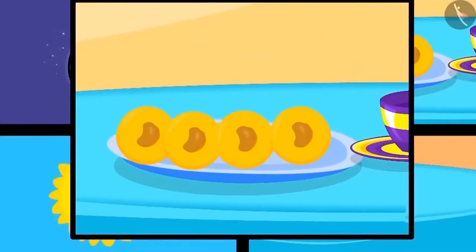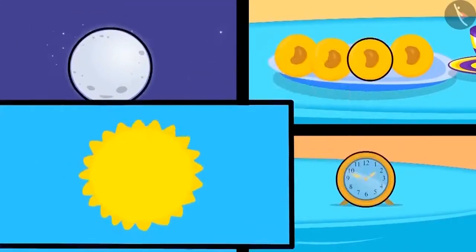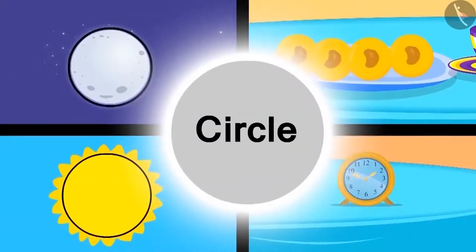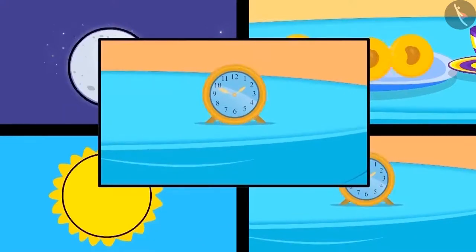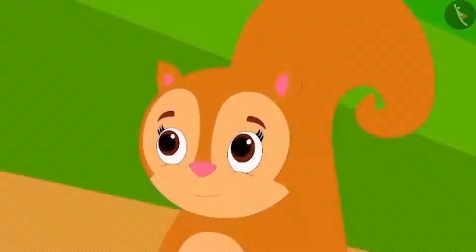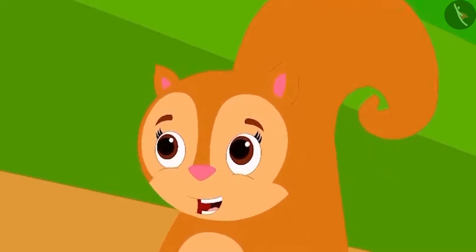Like the Peda, which is round, the moon and the sun are also round. Another name for round is a circle. Look at this picture of a round clock. Chanda became excited after learning about the shape of a circle.